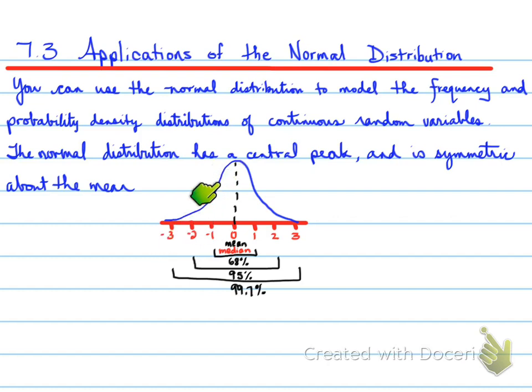Two standard deviations away covers roughly 95% of the data. There's a 95% probability of something occurring within two standard deviations of the normal distribution. Three standard deviations cover 99.7% of the data. The probability of data occurring within three standard deviations of the mean is 99.7%. Let's look at an example.